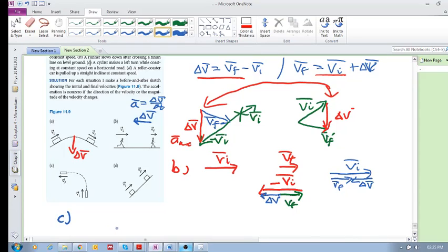What about c? I don't need to keep doing this again and again. You got v final, v initial, and v initial plus delta v gives us v final.